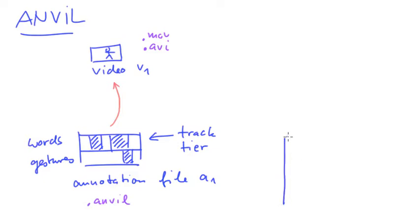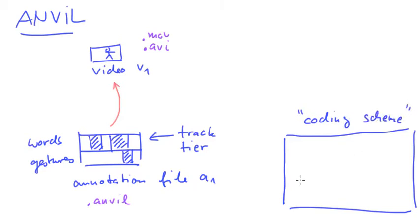So there's lots to tell Anvil about tracks and about the coding scheme as it's sometimes called. This is basically the structure that you want to have to put your coding inside. And in this particular case, you would say, I want to have two tracks. One is called words and one is called gestures.